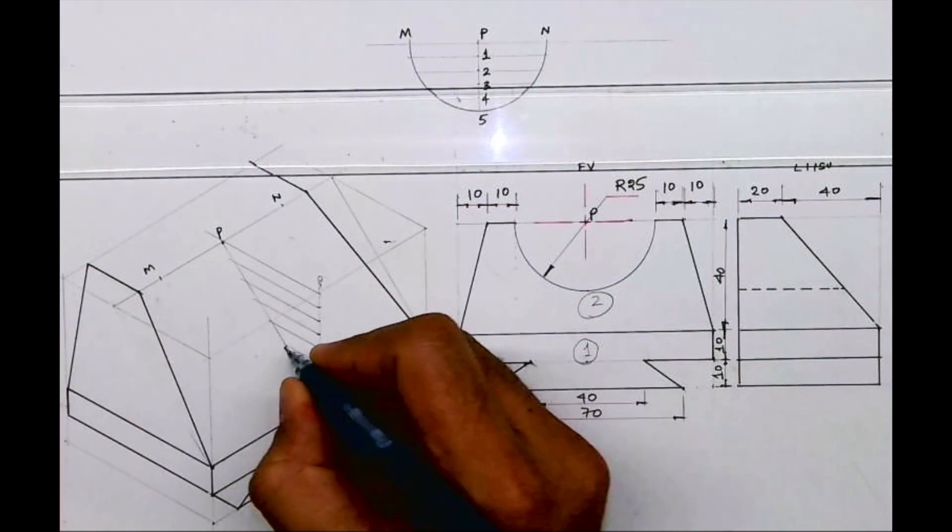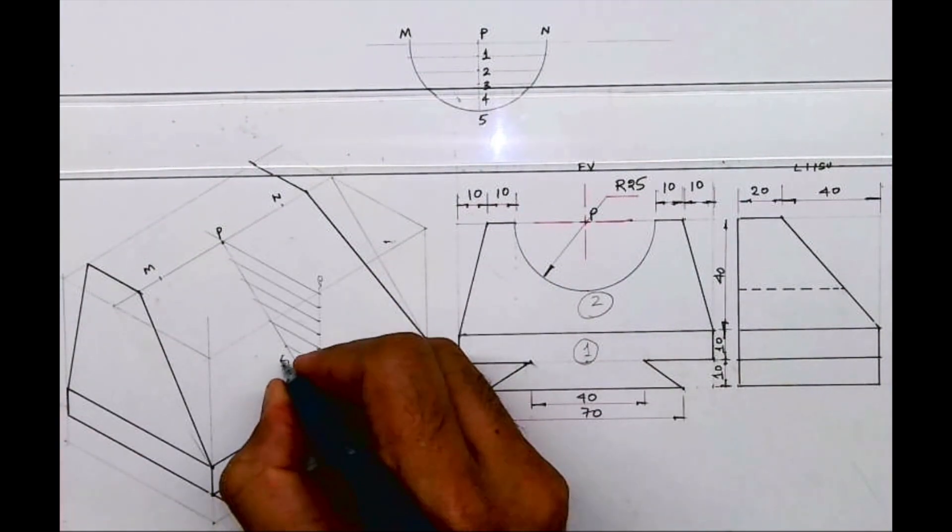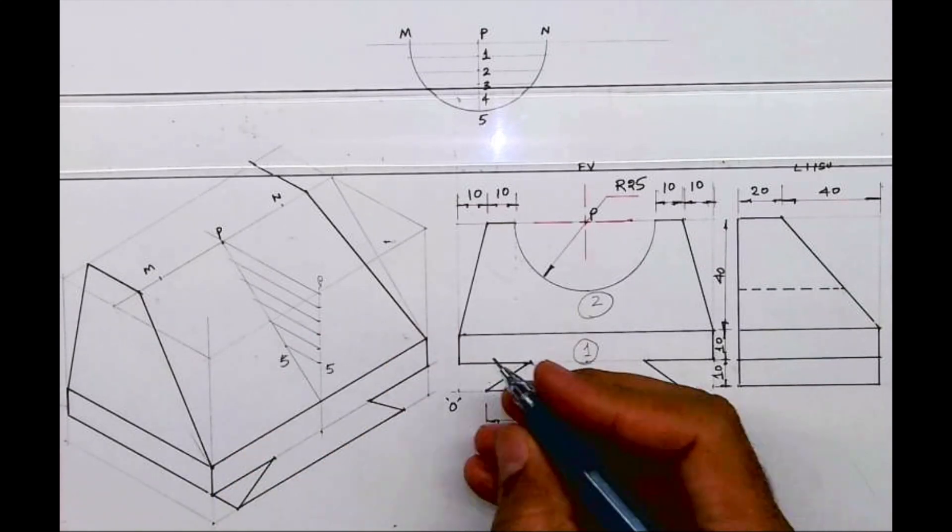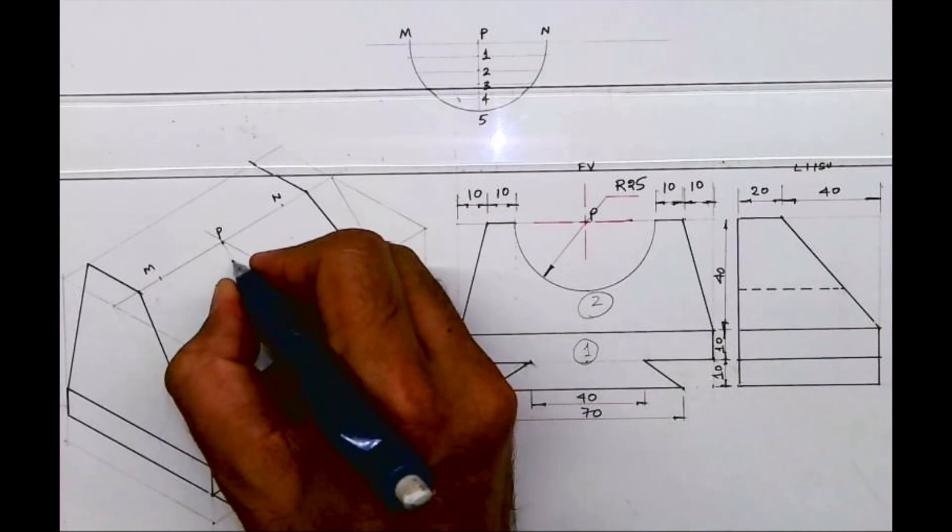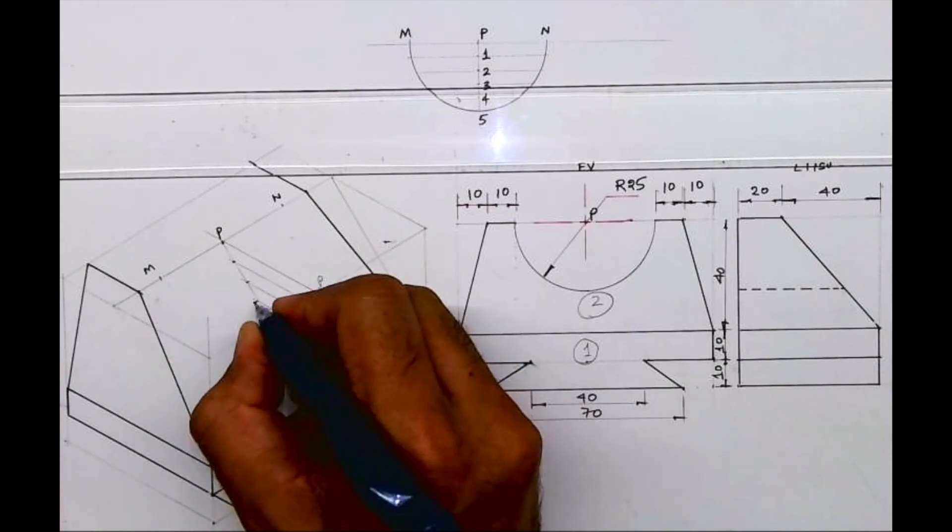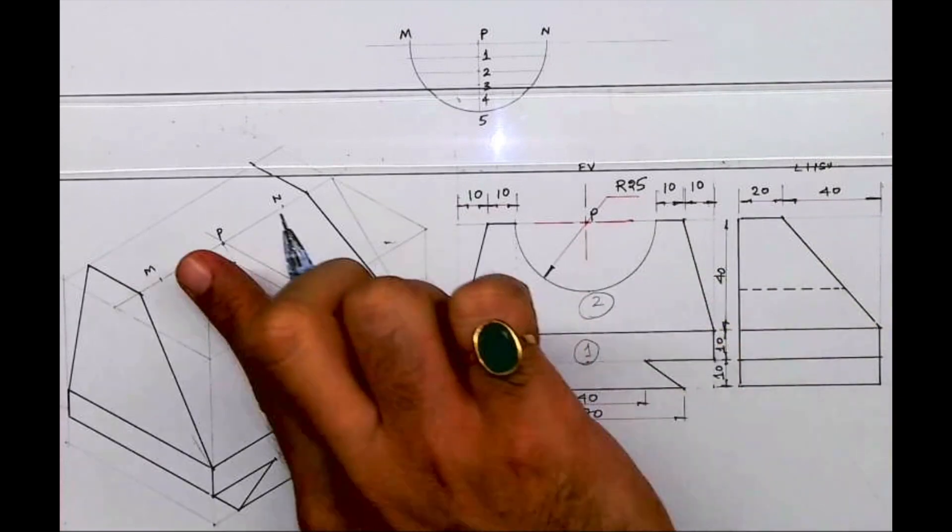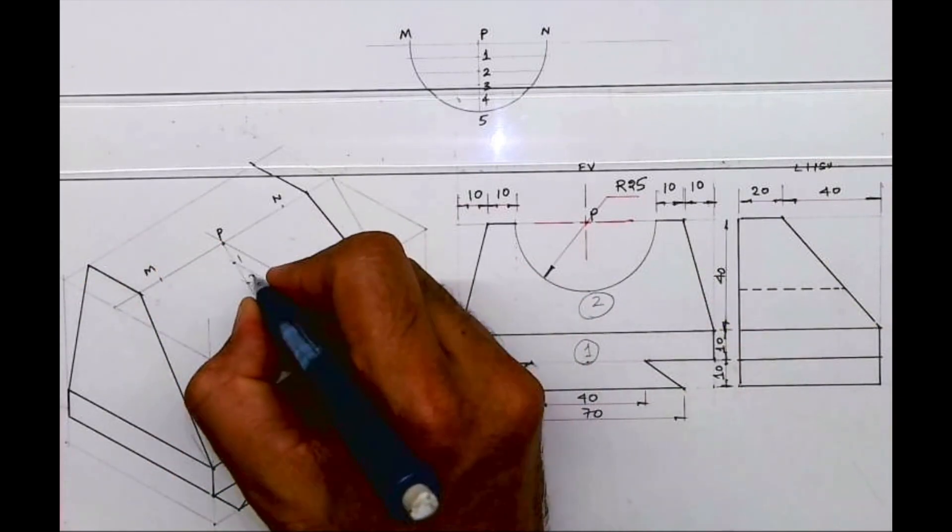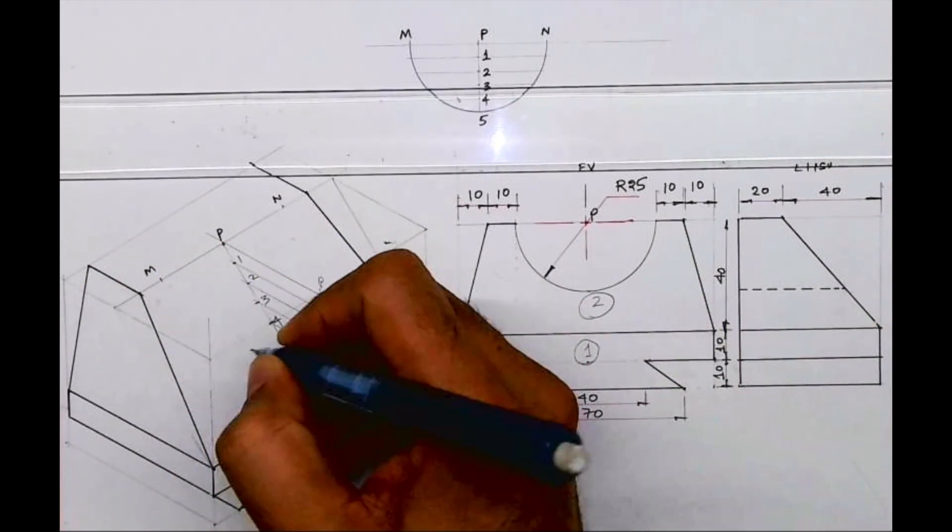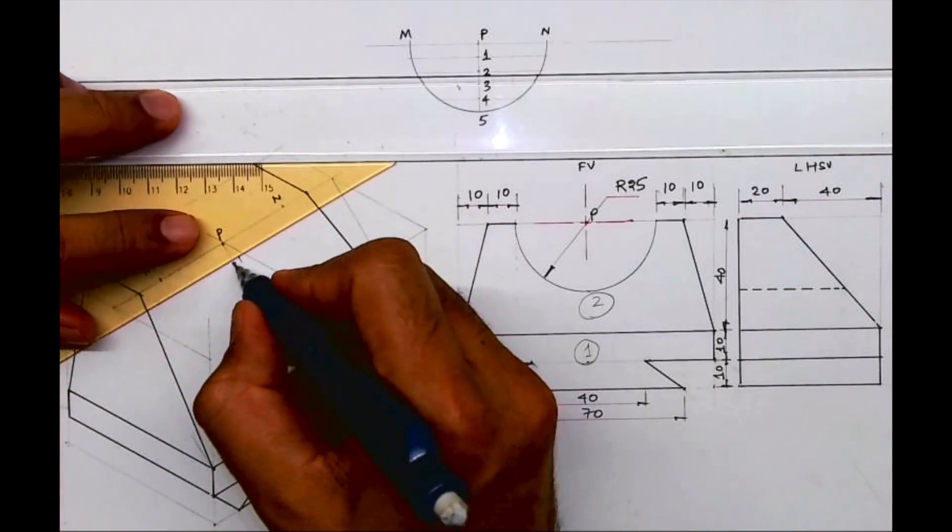This way you'll get point 5. This is 5. This is 1. So this is 1, 2, 3, 4, and 5. So whatever was vertical, now it is on the slope. This way I have marked 1, 2, 3, 4, 5. Now what I will do is draw parallel lines from 1, 2, 3, 4.